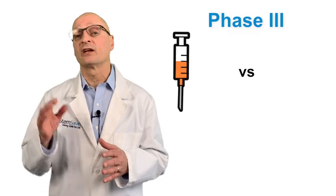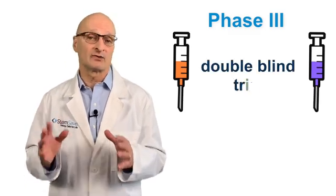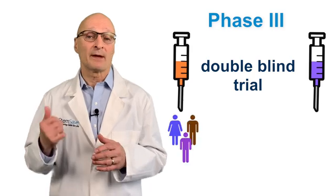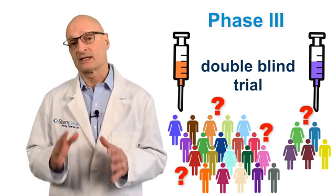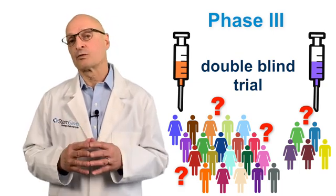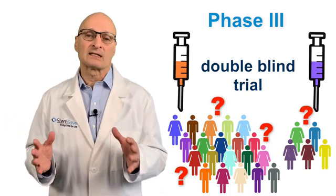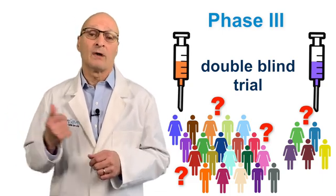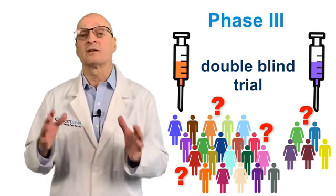In phase three the new treatment is administered and compared to the current standard treatment in what is referred to as a double blind trial. This means both the patient and the investigators do not know which treatment the patient received. Only those administering the trial know. This typically involves 1,000 to 3,000 patients. The purpose of this test is to measure efficacy, monitor side effects, and determine if the new treatment is more effective than current treatments.